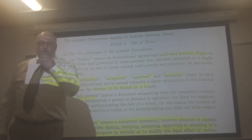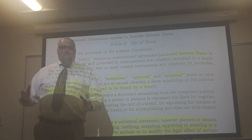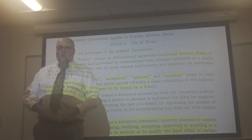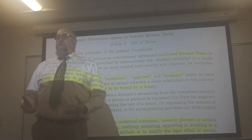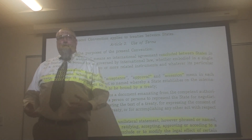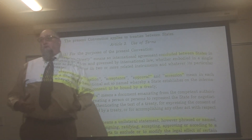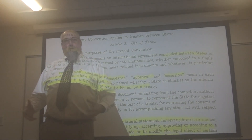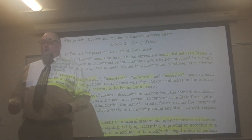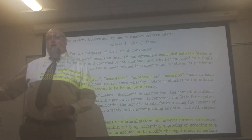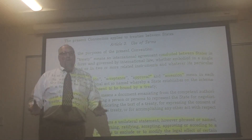Many rules in the Vienna Convention parallel domestic contract law. In the US we have the Uniform Commercial Code for domestic contracts, and internationally there is the UN Convention on International Sales. A treaty is essentially a form of contract between sovereign states, and the Vienna Convention is a codification of customary contract law rules into written form.